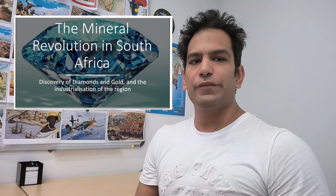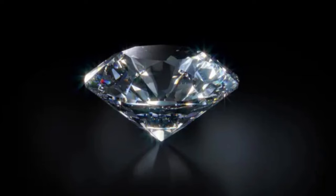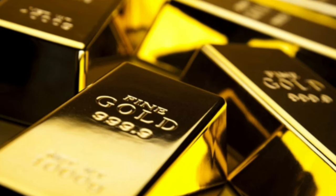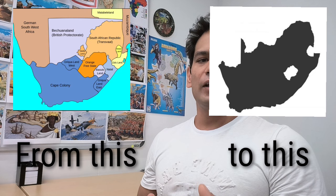One of the most important events in South African history is something that historians refer to as the Mineral Revolution. Why exactly the discovery of diamonds in 1867 and the discovery of gold in 1886 is referred to as a revolution is the focus of this video. The Mineral Revolution is the impact or the consequences that these mineral discoveries had on shaping the region.